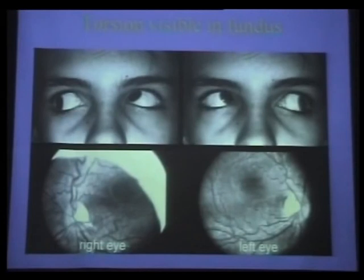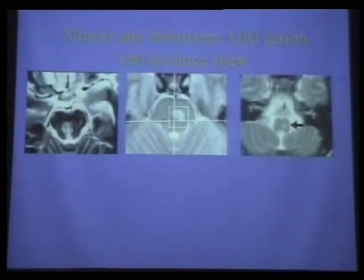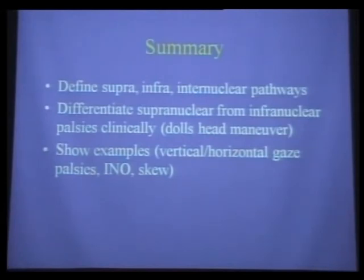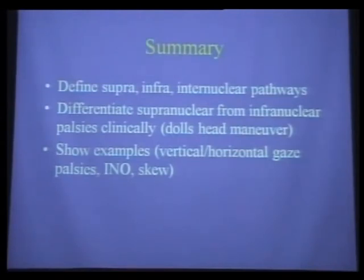Skew deviation can be from any brainstem lesion—midbrain, pons—and it's not a very localized descriptor. When the torsion doesn't match the three-step test, think skew. You should think about skew if the three-step test doesn't point to a fourth nerve palsy, or if you diagnose an isolated inferior rectus palsy—which is extremely rare. The fourth step in the three-step test is to measure torsion: if you find excyclotorsion toward the hypotropic eye, that's much more likely skew with an ocular tilt reaction than a fourth nerve palsy. You can measure torsion either objectively by looking at the fundus or subjectively with the double Maddox rod.